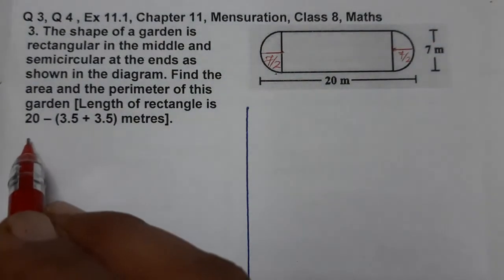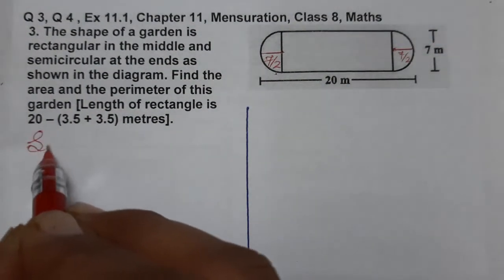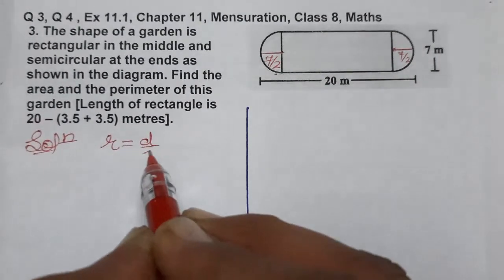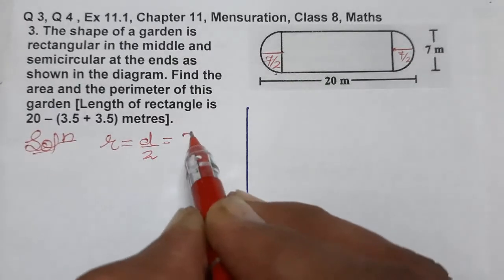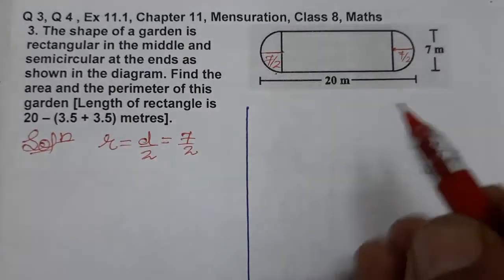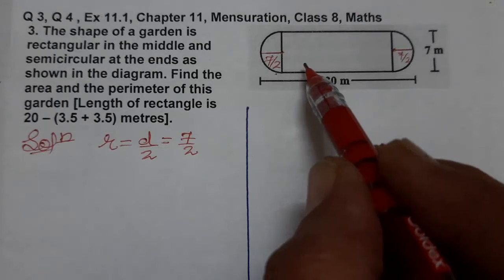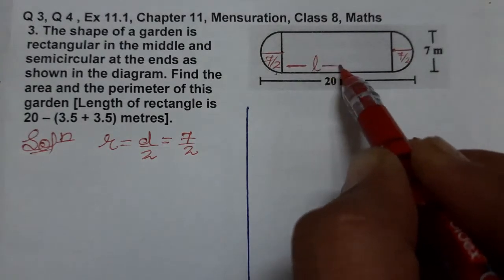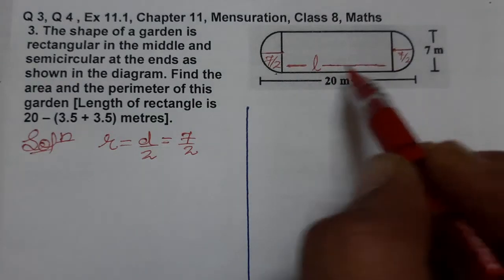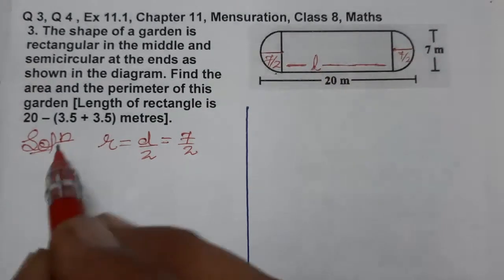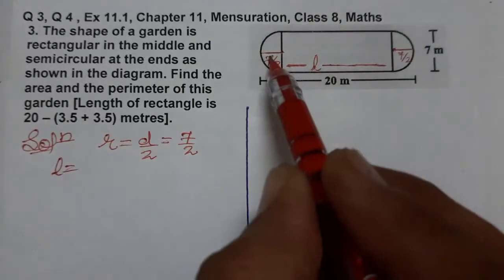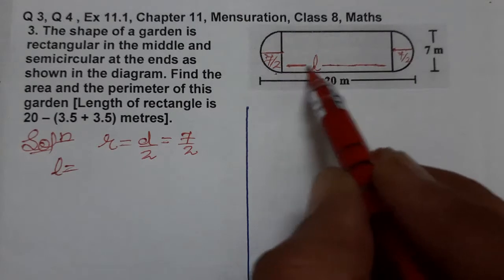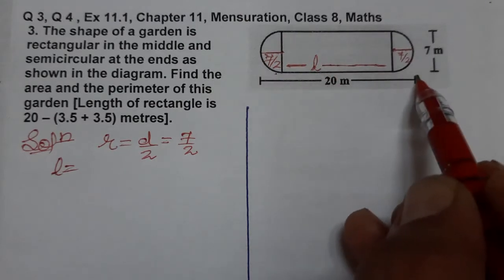Let's write the solution. Radius equals diameter by 2, so radius is 7 by 2. Now we need to find the length. The total length is given as 20. We subtract 7/2 from each side — that is 3.5 plus 3.5 — from the total length.